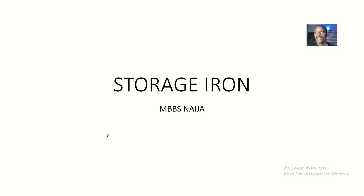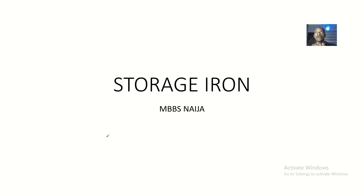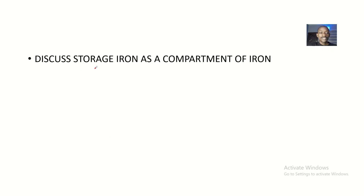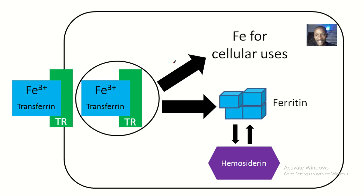We've been talking about compartments of iron, and today we'll be talking about the third compartment, which is storage iron. Earlier we spoke about heme iron, which is iron stored in hemoglobin. We spoke about transport iron, which is iron bound to transferrin. Now we'll be talking about storage iron, and we'll look at the various sites where iron can be stored. In storage iron, we get to see the two forms in which iron is stored.